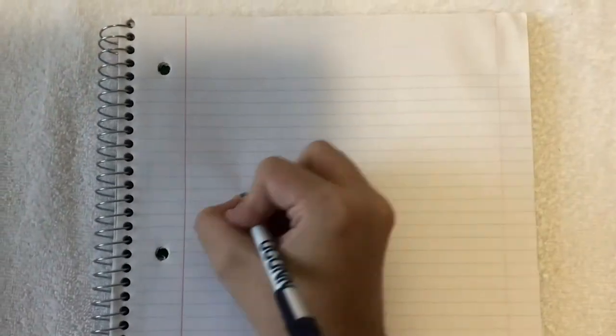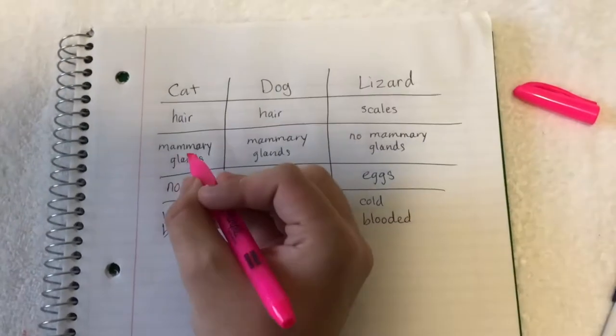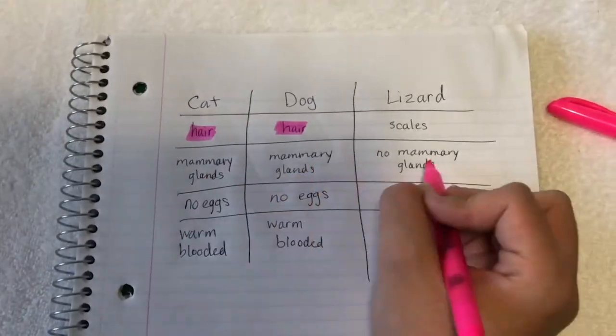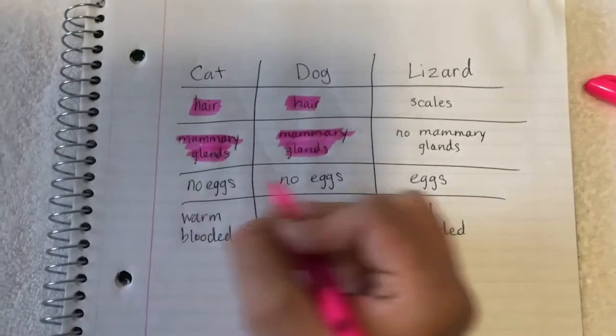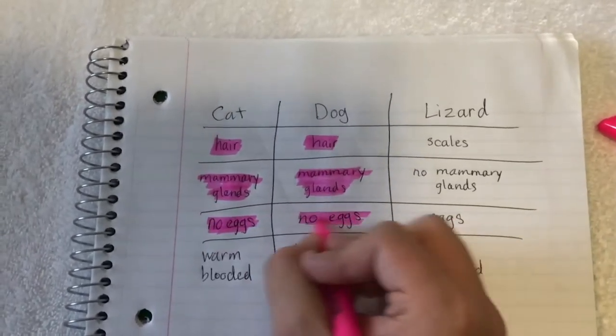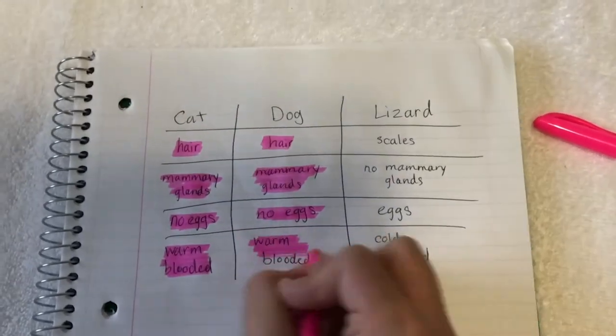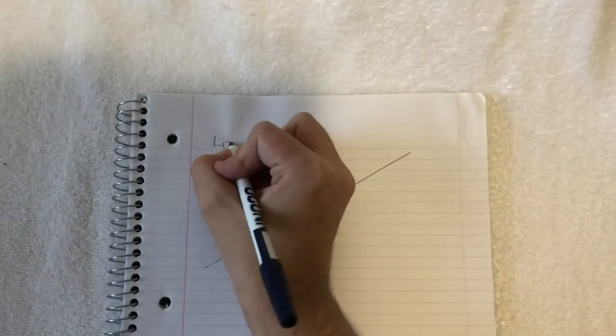Now that we've observed and thought about what our organisms have in common, we're ready for step three: to build our tree. From my list, I can see that lizards seem to be the more unique animal among the three — lizards don't share as many things in common with cats and dogs. This means lizards are probably not as closely related to the other two, so we will put the lizard in the first branch.